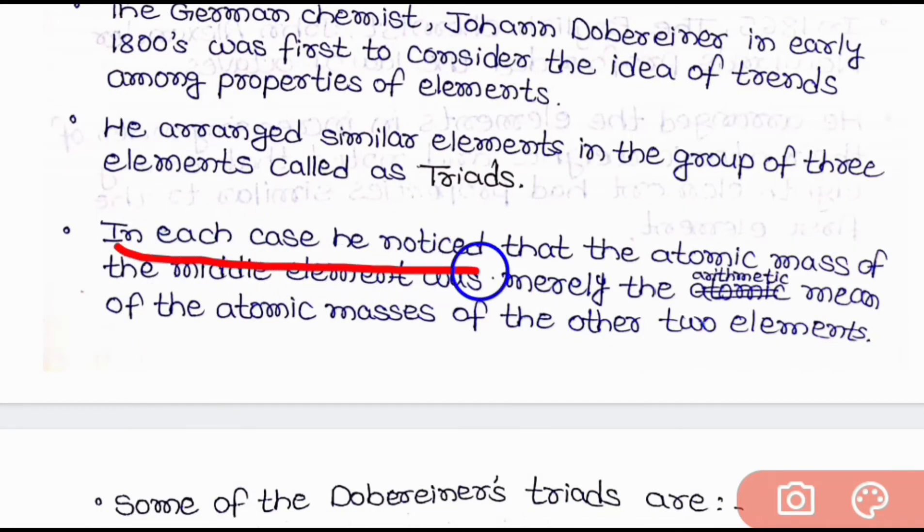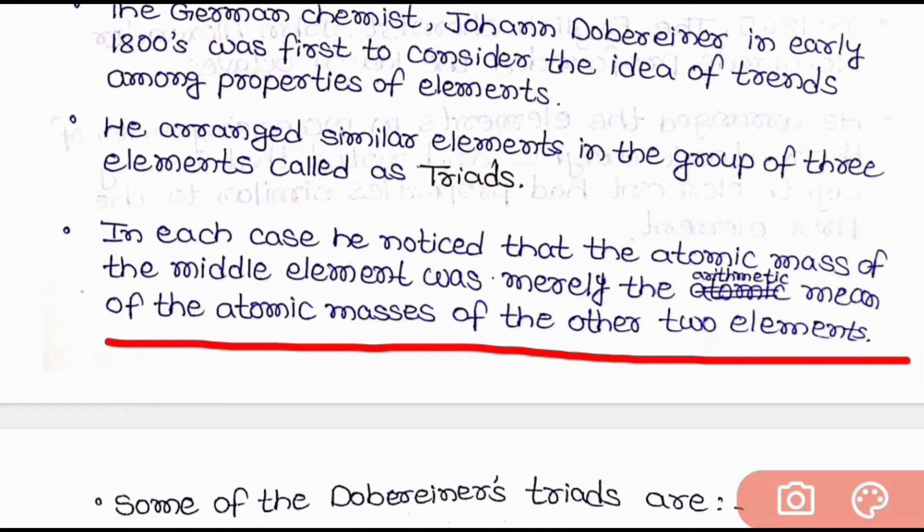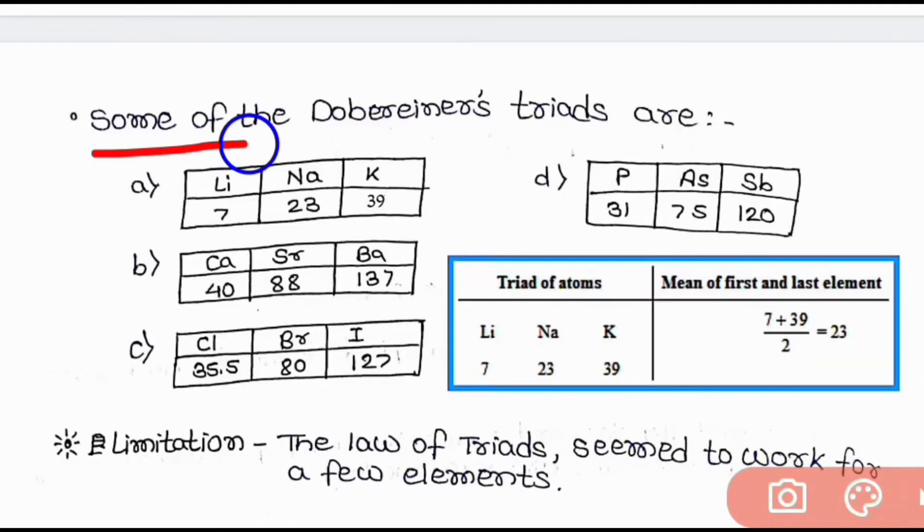In each case, he noticed the atomic mass of the middle element was merely the arithmetic mean of the atomic mass of the other two elements. Now let us come to some of the Döbereiner Triads. And the first triad is lithium, sodium and potassium. Here you can see that the atomic mass of lithium is 7 and the atomic mass of sodium is 23 and the atomic mass of potassium is 39. And here the mean of the first and the last element that is 7 plus 39 by 2 is equal to 23 that is equal to the middle element atomic mass.